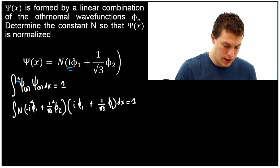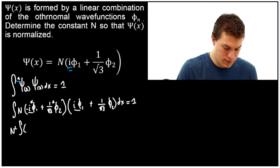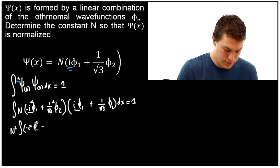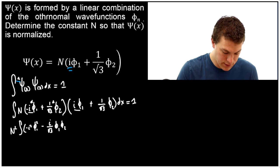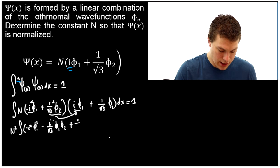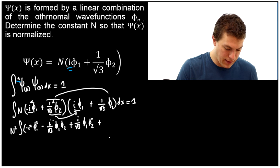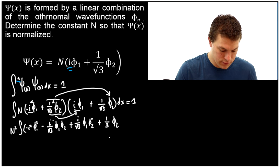Again, we FOIL and pull out n, getting n squared times the integral. Multiplying the first terms together gives us negative i squared phi 1 squared. The cross terms give us minus i over square root 3 times phi 1 phi 2 (complex conjugate), and plus i over square root 3 times phi 1 phi 2 (where phi 2 is the complex conjugate). The last term is 1 over 3 times phi 2 squared. All of this dx equals 1.